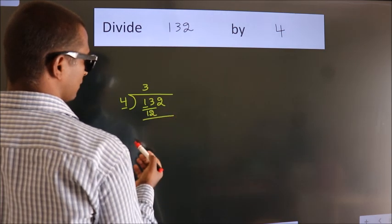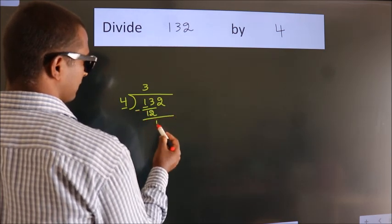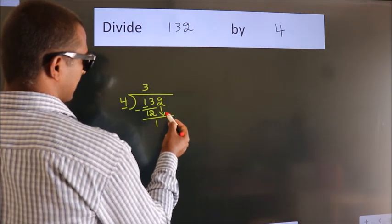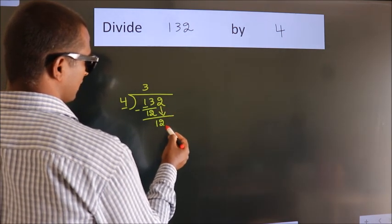Now we should subtract. We get 1. After this, bring down the beside number. So 2 down, so 12.